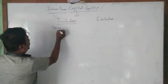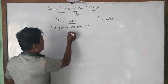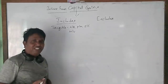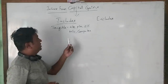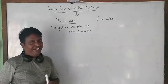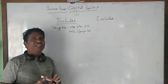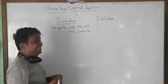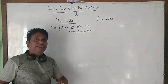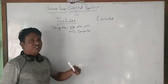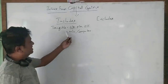If these assets are used in the business, then only we call them capital assets. If these assets are used by an individual for personal use, we don't call them capital assets, except for land and building. If these assets are used for business purposes, then we consider them as capital assets, and such capital assets are tangible assets.